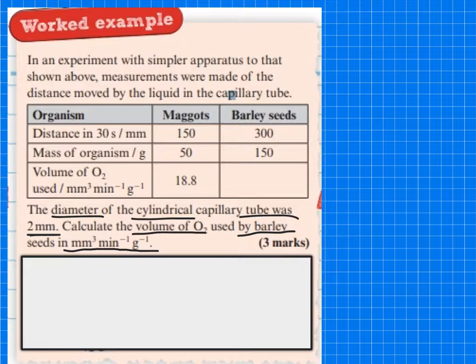Now, it wants you to work it out per minute, but what we're going to do first of all is work out the volume of gas used in 30 seconds. So you'd be expected to know the volume of a cylinder, which is pi r squared times the height. So that's the volume of a cylinder. So in this case, it would be pi times 1, because r squared, the diameter is 2 millimetres, radius is 1. So squared, 1 times 1 is 1, times the distance that it moved, the height that it moved, which is 300. So that will give us 942 millimetres cubed in 30 seconds per 150 grams. So it's not per gram, it's per 150 grams.